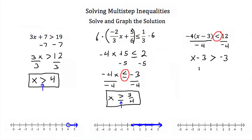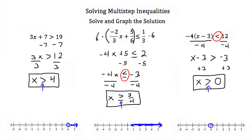Our next step is to add 3 to both sides because we're trying to get x alone on one side. If we do that, we'll be left with x needs to be greater than — negative 3 plus 3 is just 0. So x needs to be greater than 0. To graph that, this is a greater than sign, not a greater than or equal to, so we put an open circle at 0. Everything greater than 0 is a valid solution, so we shade everything to the right on the number line.